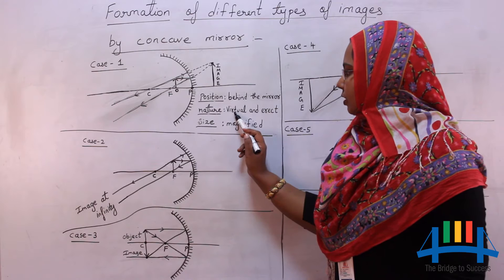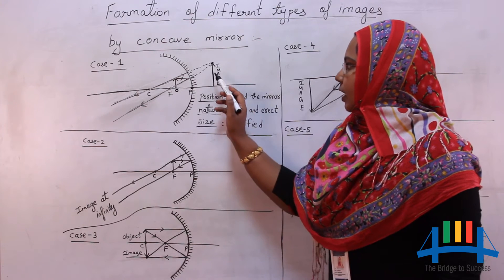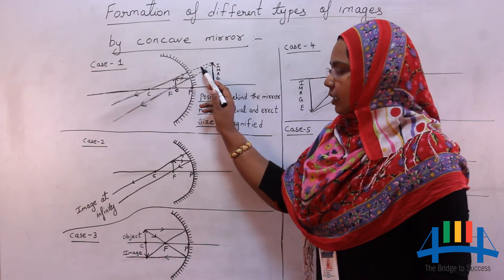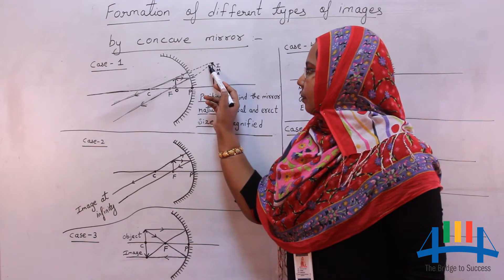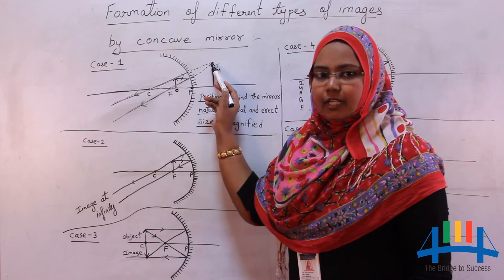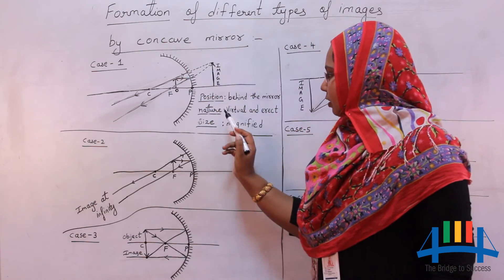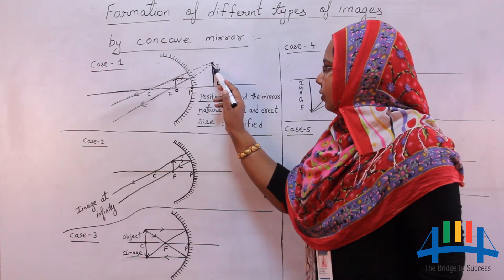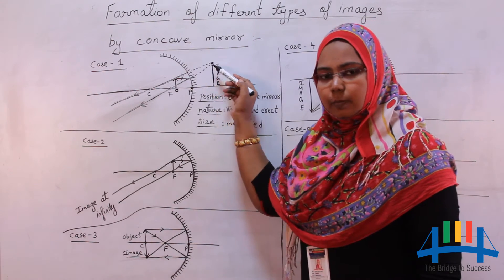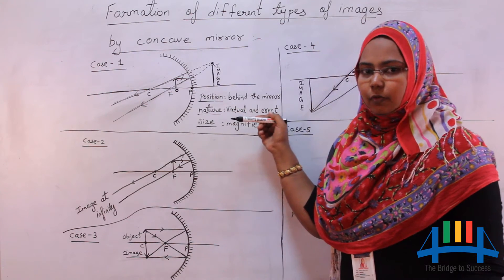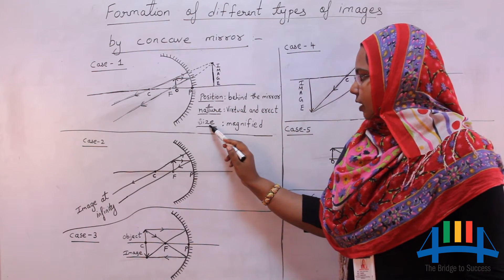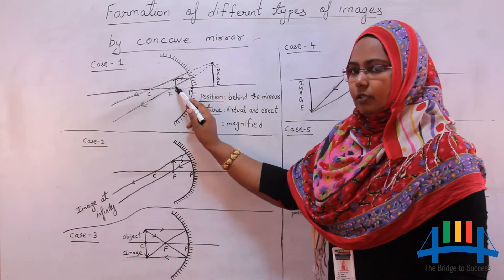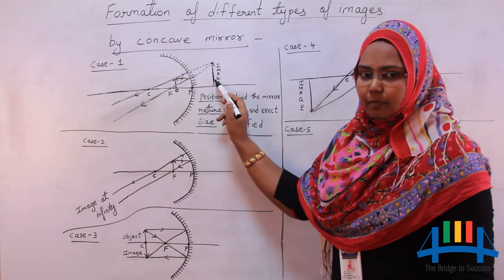The nature is virtual and erect. Why virtual? Because the rays are not actually meeting — they appear to meet. When the rays appear to meet, we call that image a virtual image. Why erect? Because it is above the principal axis. If the image forms below the principal axis, then we get an inverted image. The size of the image is bigger than the object, so the image is magnified.